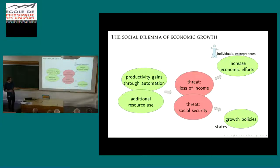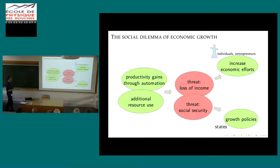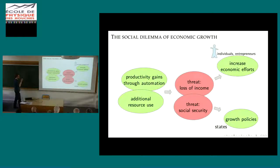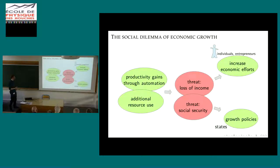This creates a threat in the sense of loss of income, so individuals and entrepreneurs have to increase their economic efforts—they have to invest in R&D. At the level of states, the risk of unemployment creates a threat to the stability of social security systems. So we see all these growth policies, all this investment, Horizon 2020 incentives for growth, etc.